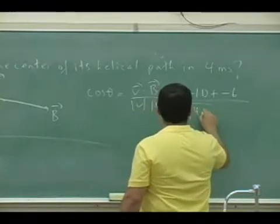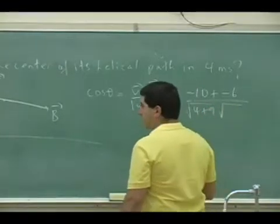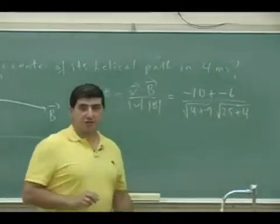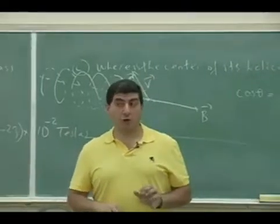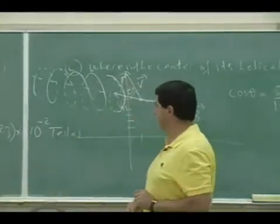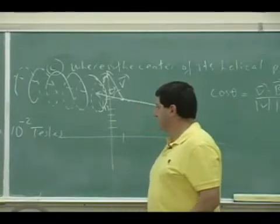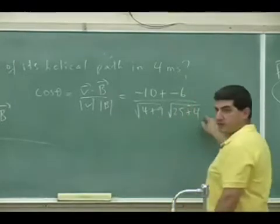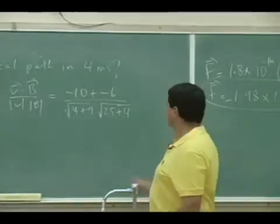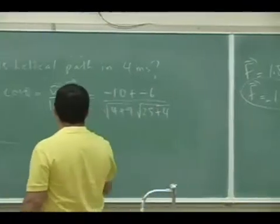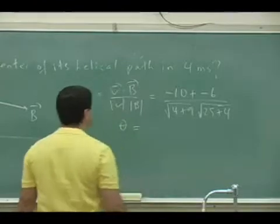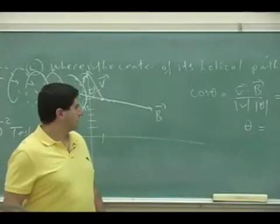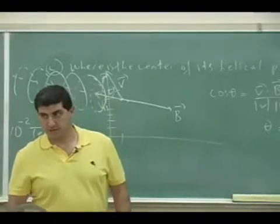That's divided by magnitude of V, which is square root of 4 plus 9, times magnitude of B, which is square root of 25 plus 4. Notice I didn't worry about the powers — the 10 to the fourth and 10 to the minus 2 — because they appear in both numerator and denominator and cancel out. All that matters is the unit vector components. So theta is going to be an obtuse angle, greater than 90 degrees.